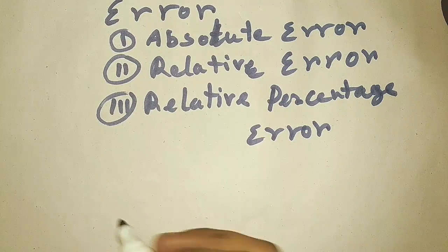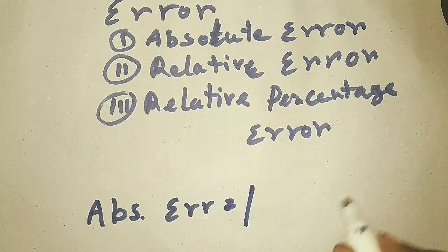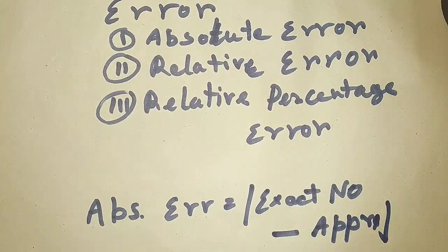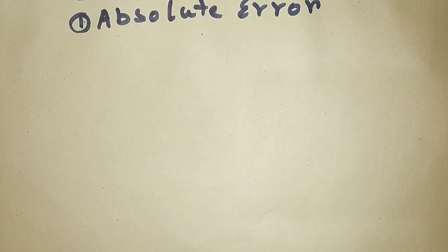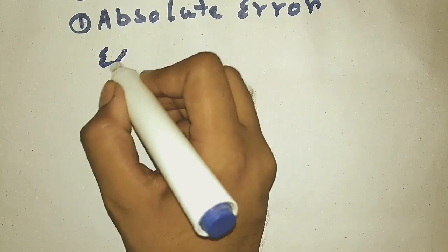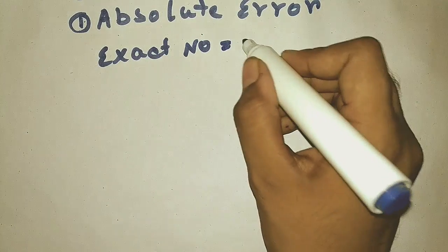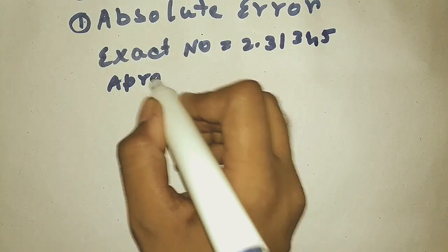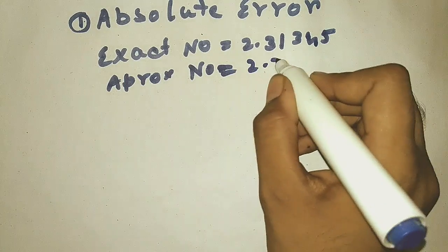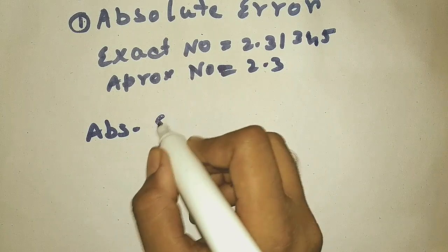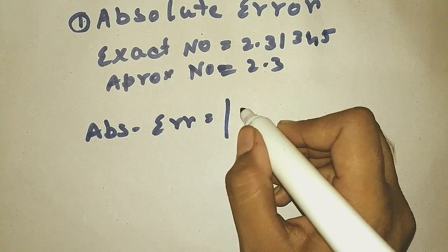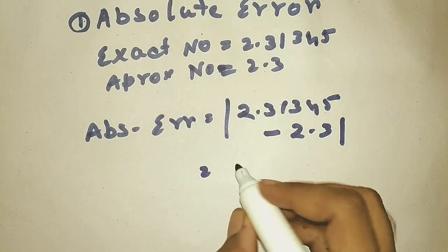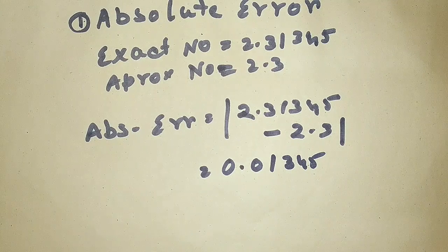To find the absolute error, subtract the exact number and the approximate number and take the mod value. Let's take an example: let the exact number be 2.31345. We round it off to one decimal place to get the approximate number, which is 2.3. So the absolute error will be the mod of the difference between these two numbers — just subtract and take the mod value — which gives 0.01345. So this is the absolute error.